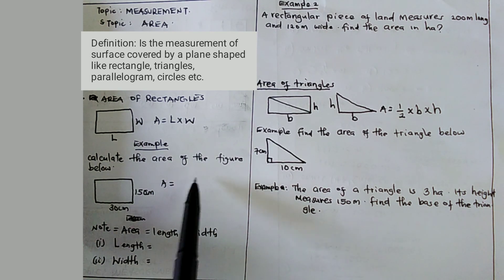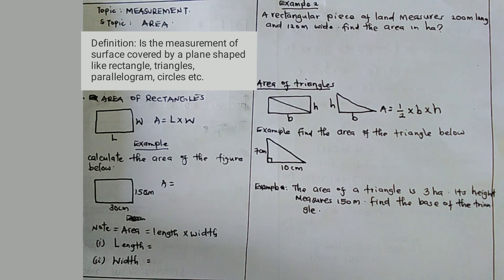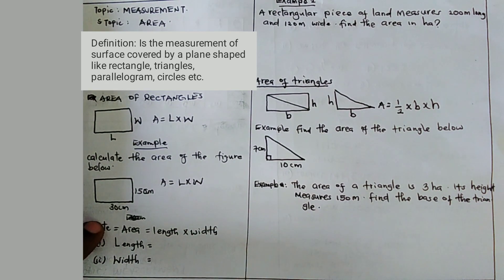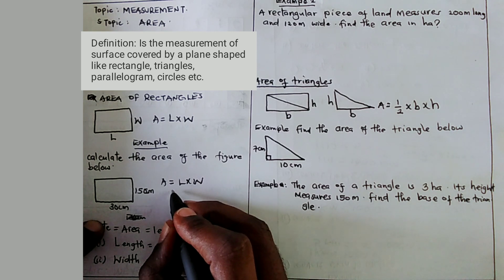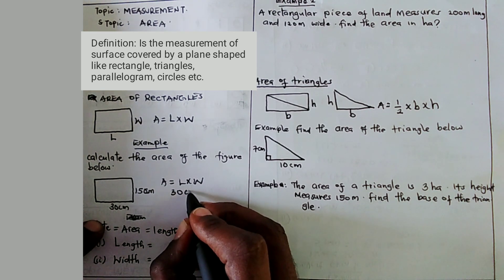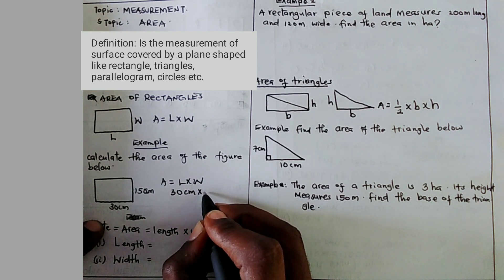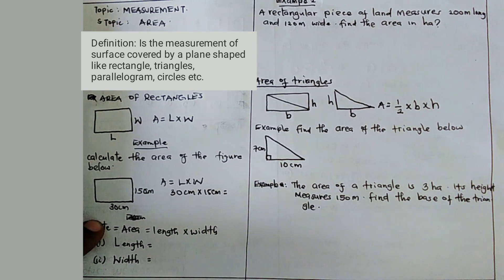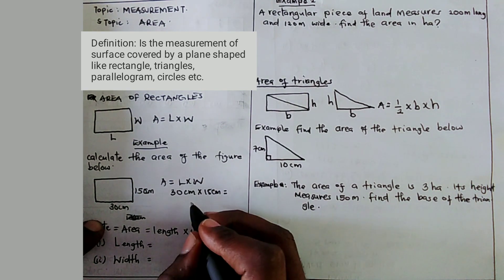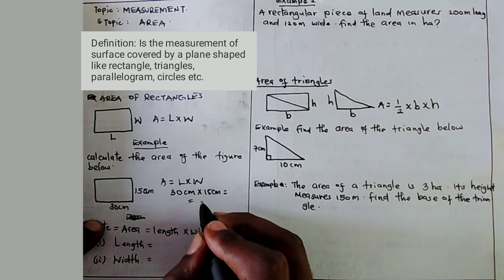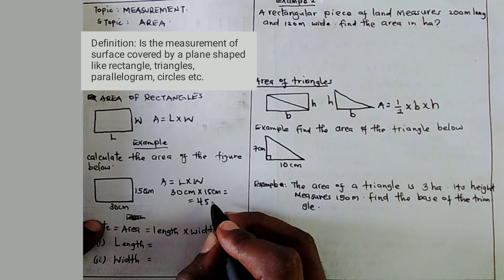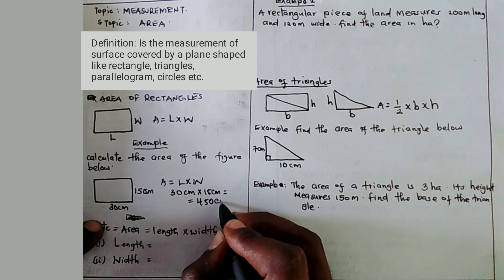Example: calculate the area of the figure below. Area is equal to L times W. So in this case we are going to multiply 30 centimeters, which is our length, times 15 centimeters, which is our width. 30 times 15 gives us 450 centimeter square.